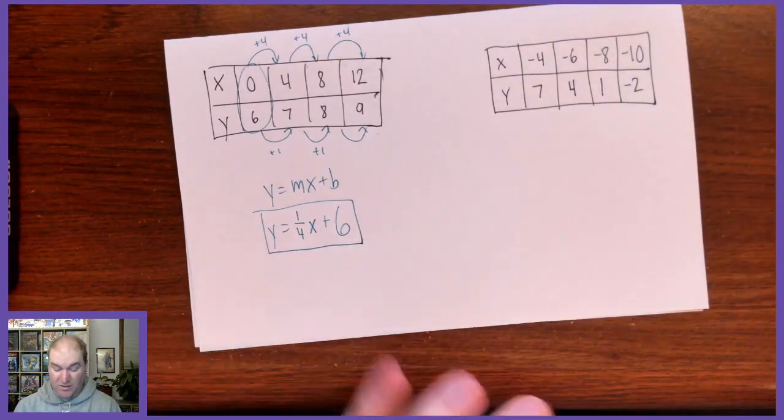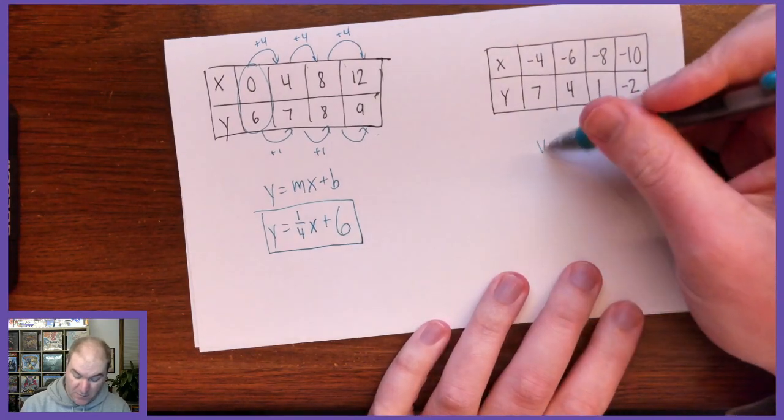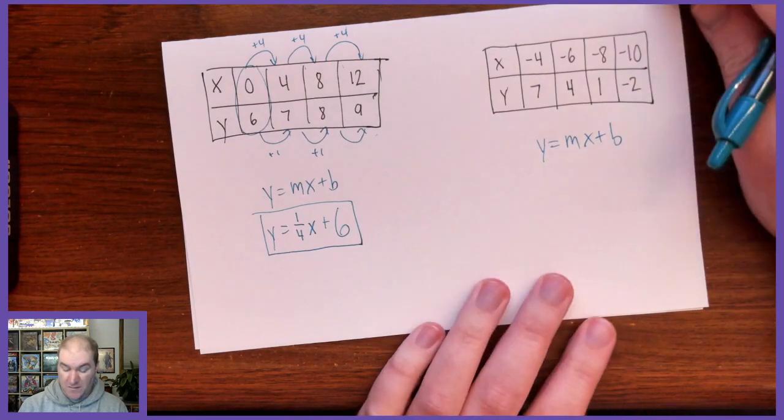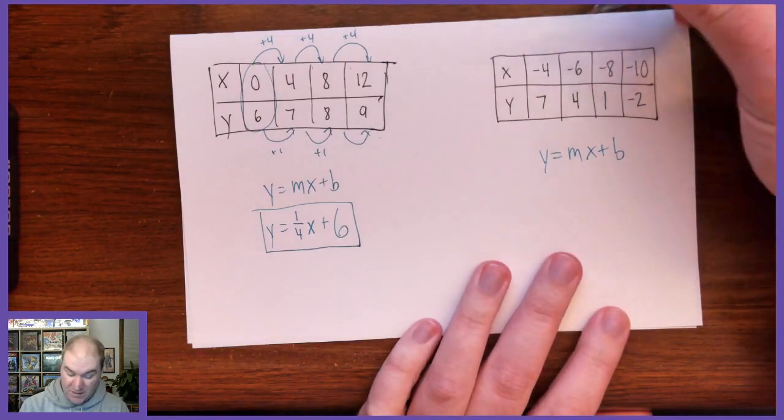And then this one kind of combines everything we just talked about. Remember, the equation of a line is always y equals mx plus b. I always write that first.